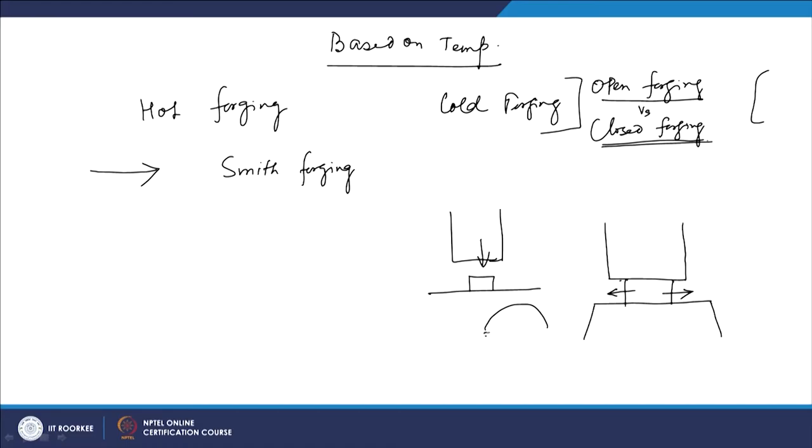In closed die forging, the dies are closed — both dies meet each other and are closed together. You may have dies of complementary shapes. Both dies come together and ultimately you can have a complex shape made in a closed die. Initially the dies will not fully close; reduction happens in succession. At the end, the dies close and the cavity inside the two dies defines the final shape of the material.